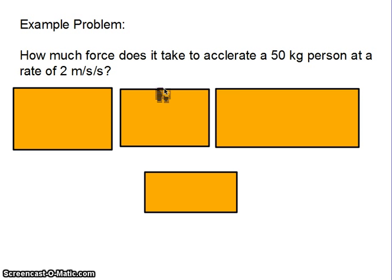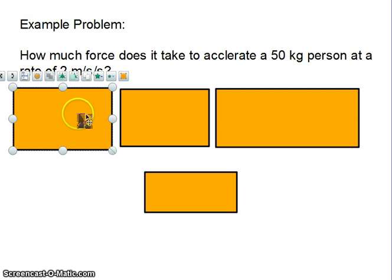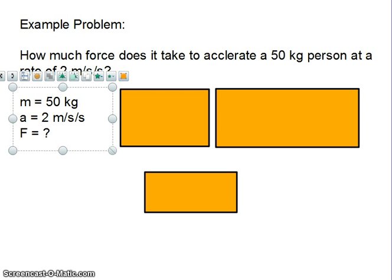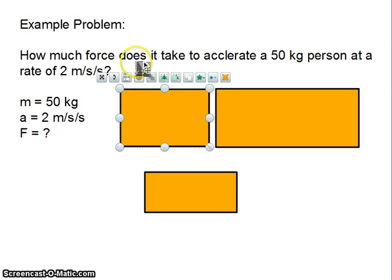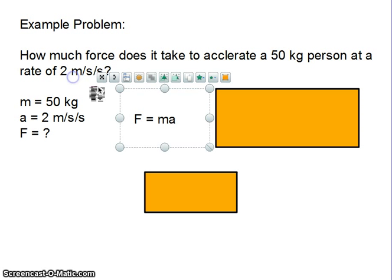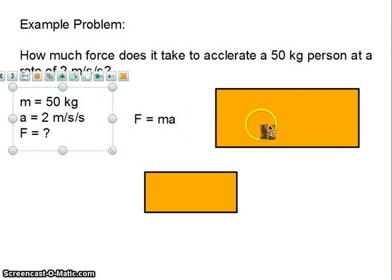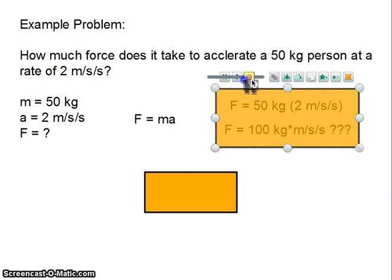To do an example problem with this Newton's second law. How much force does it take to accelerate a 50 kilogram person at a rate of 2 meters per second per second? Just like what we've done in the past, first we want to line up what do we have to work with? We have F, M, A. What's our relationship? How are they related? So F equals MA.